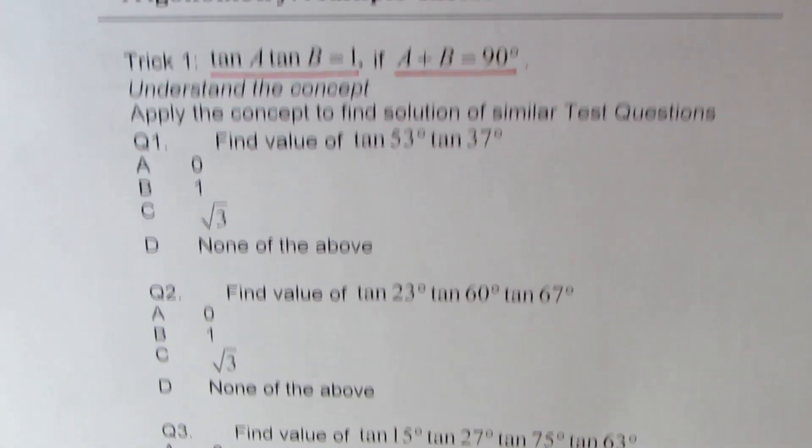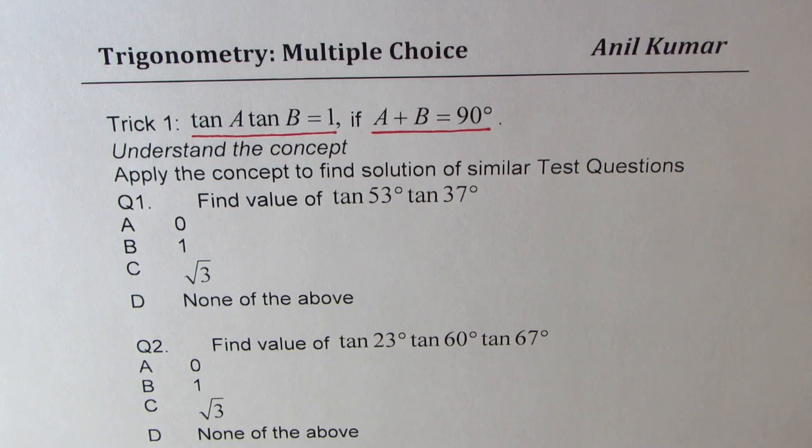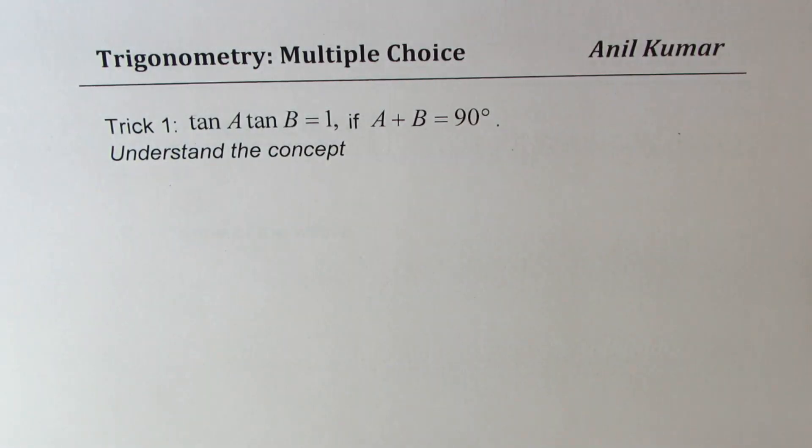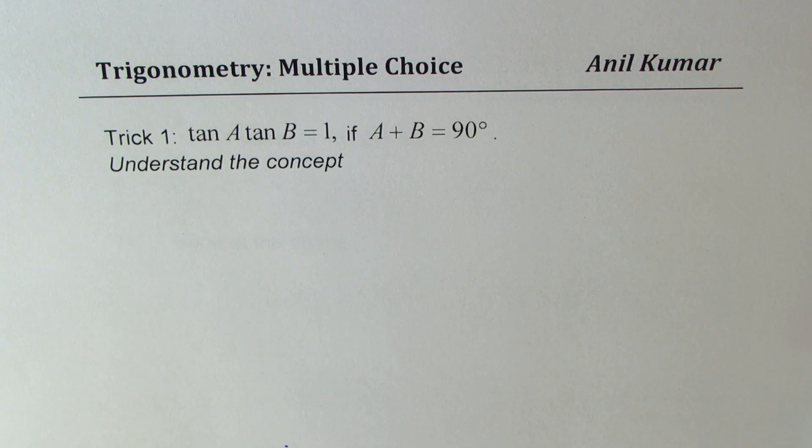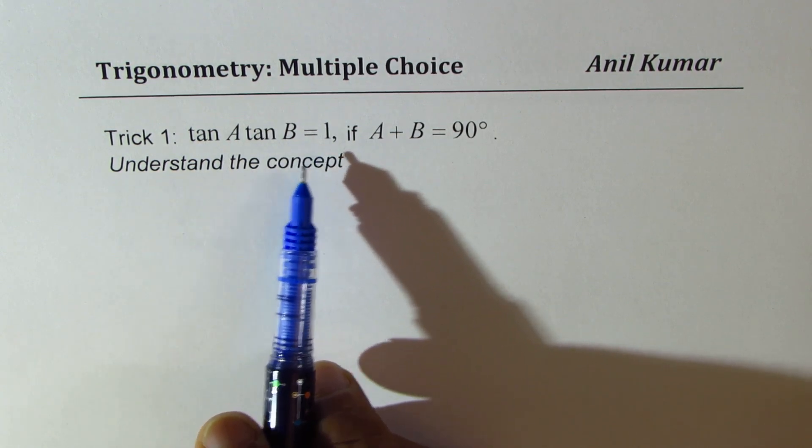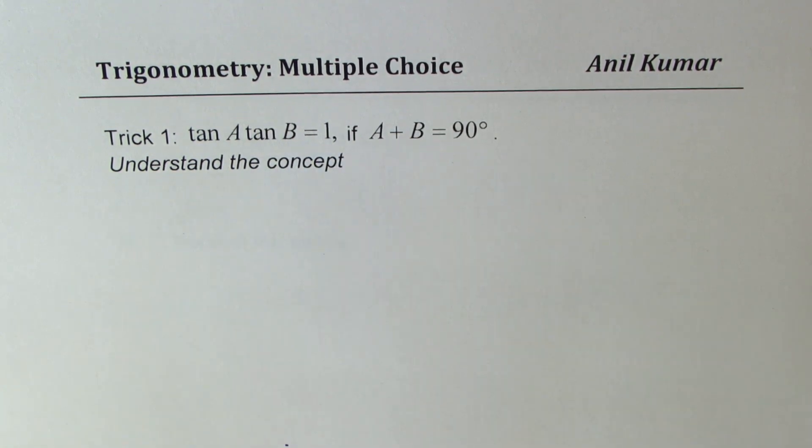You can always apply this trick, find the answer. But let us first begin to understand why tan A, tan B equals to 1 if A plus B equals to 90 degrees. Now let us try to understand the first trick which is product of tan A and tan B equals to 1 if sum of angles A and B is 90 degrees.